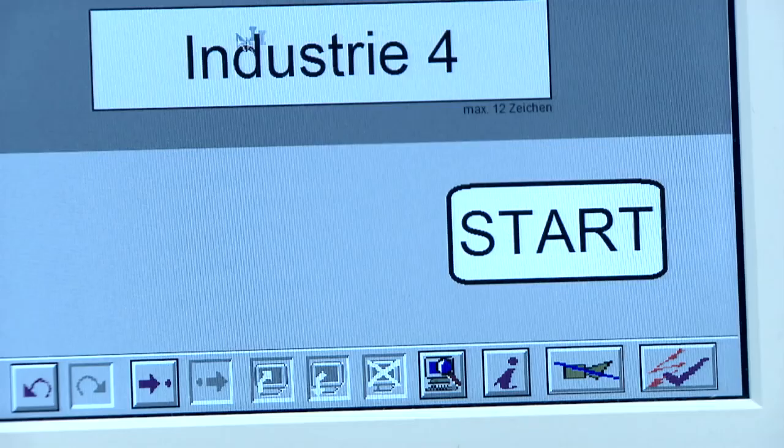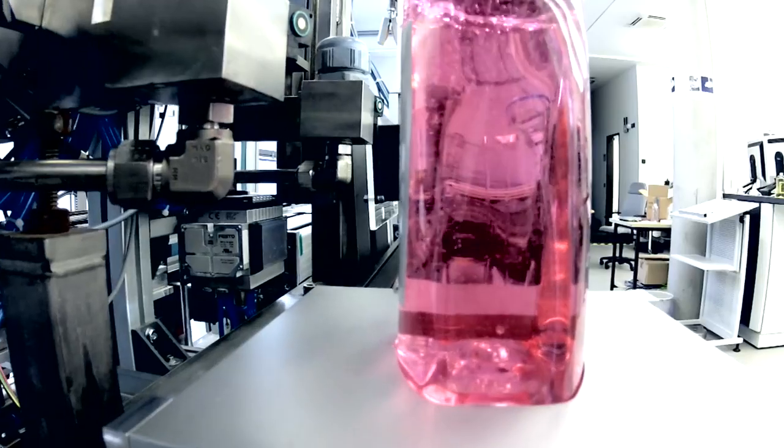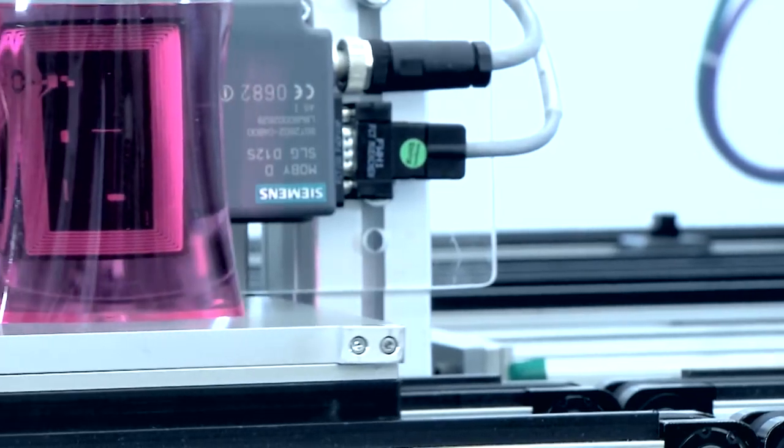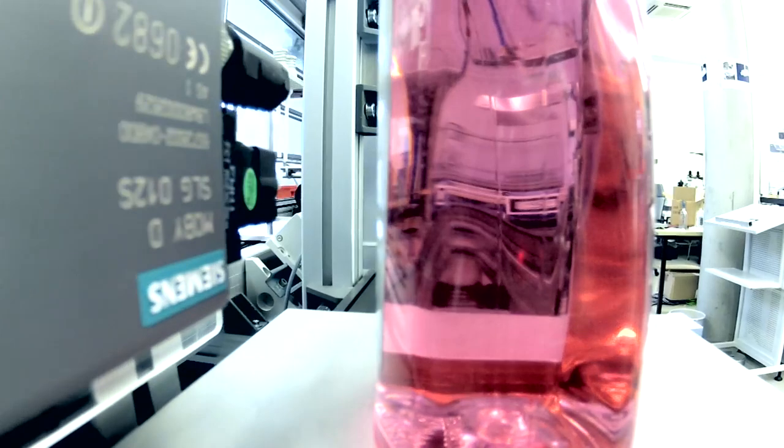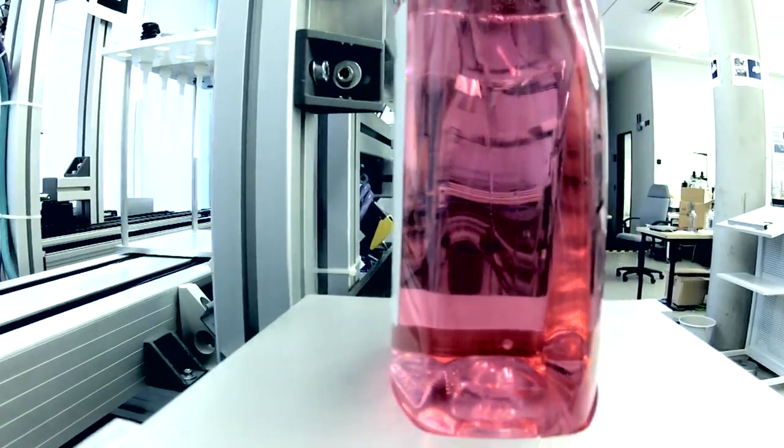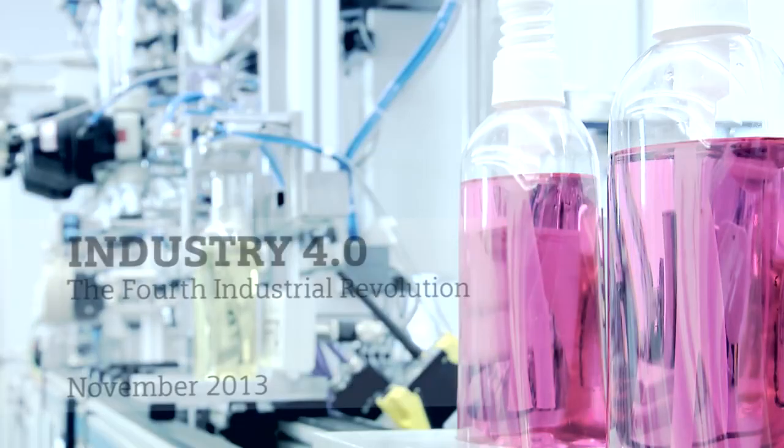Raw materials and machines are interconnected within an internet of things. The objective: highly flexible, individualized and resource-friendly mass production. That is the vision for the fourth industrial revolution.